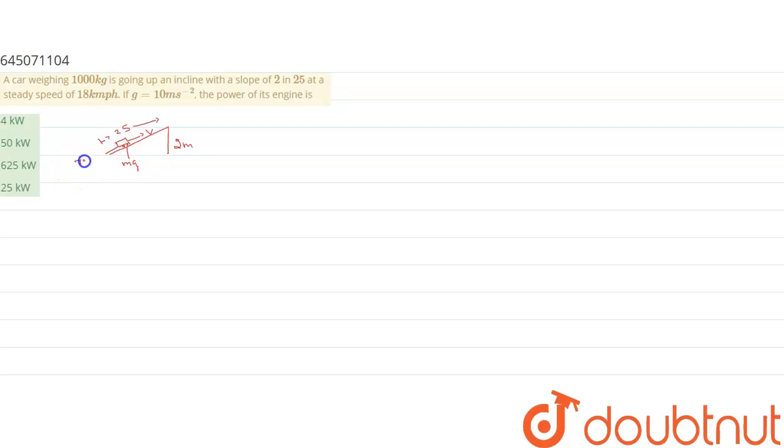So we can define them as mg sin θ. Right? So from here, the value of sin θ will be equal to 2 upon 25. Right? So from here, P will be equal to work done by time.